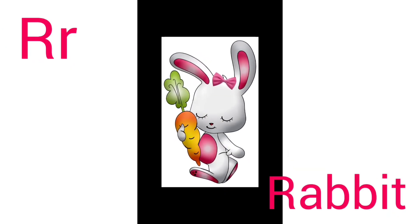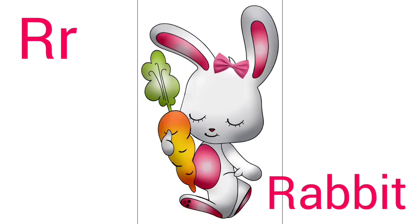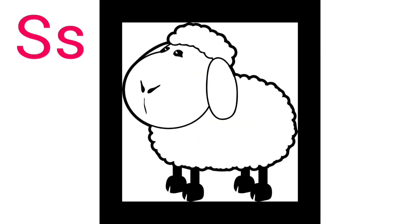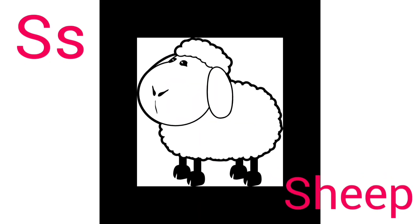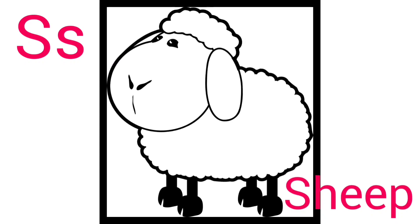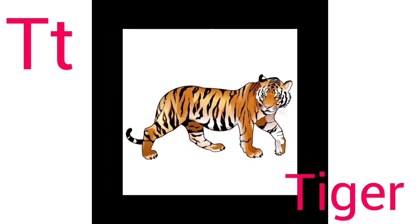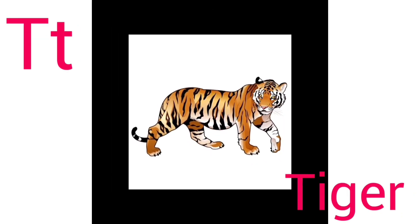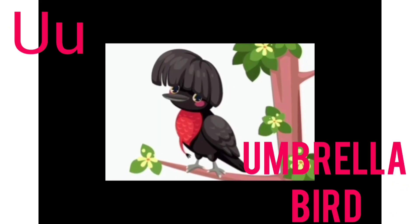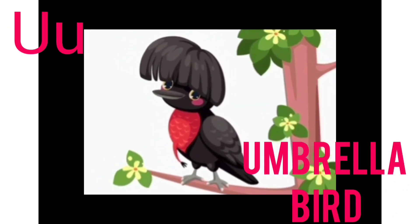R for rabbit. S for sheep. T for tiger. U for umbrella bird.